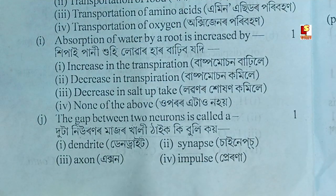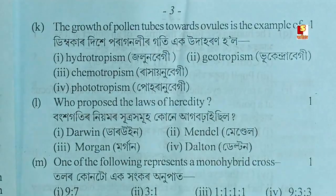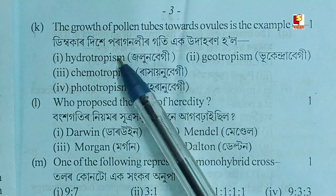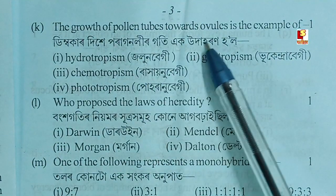The answer is synapse. The growth of pollen tubes towards the ovule is an example of which type of movement?